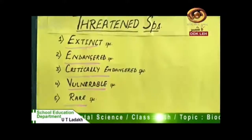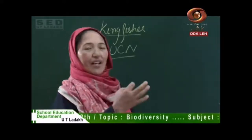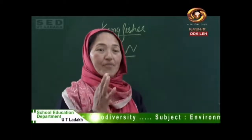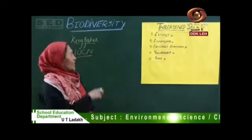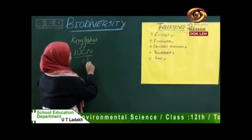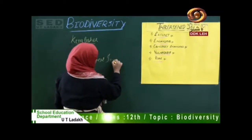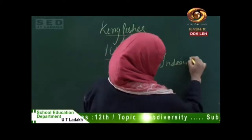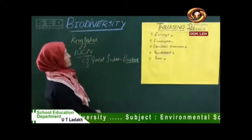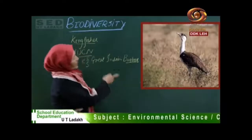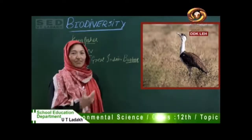The third category is Critically Endangered — species whose population has decreased by 80 percent over three generations. For example, the Great Indian Bustard, which is found in Rajasthan, is a critically endangered species.